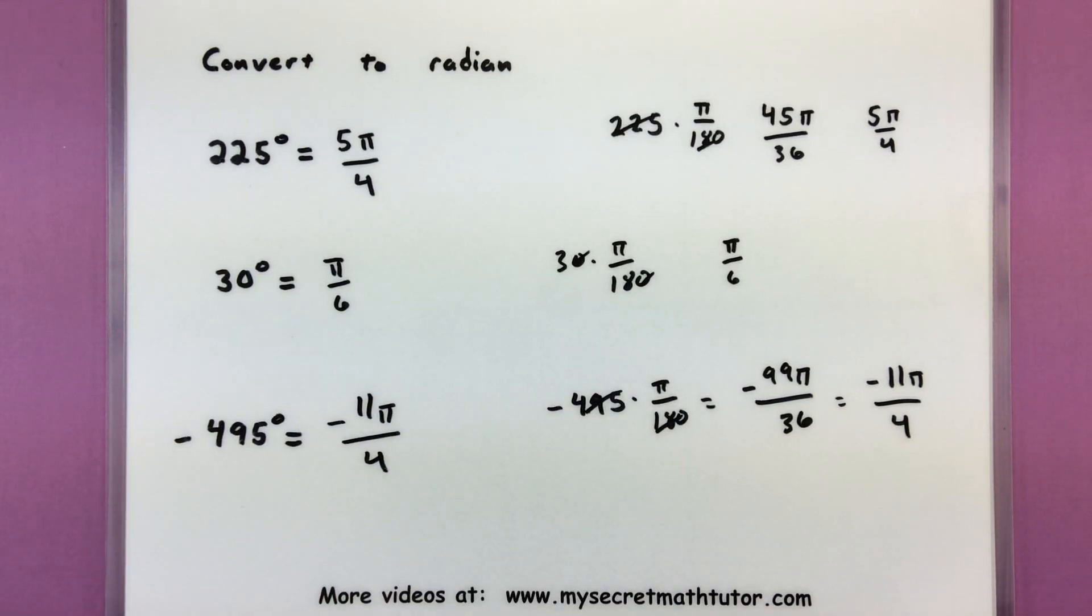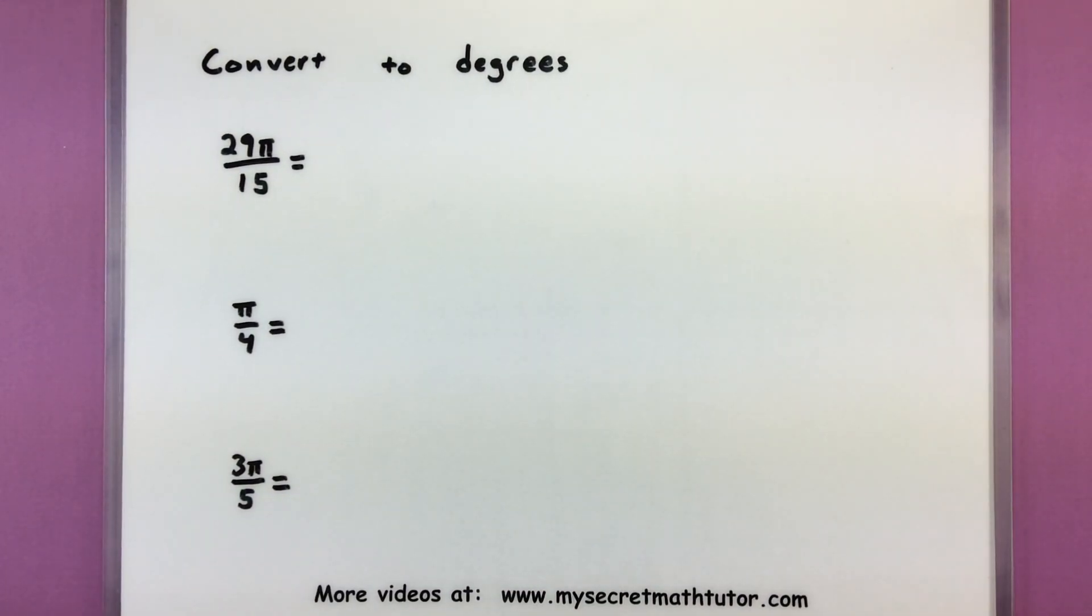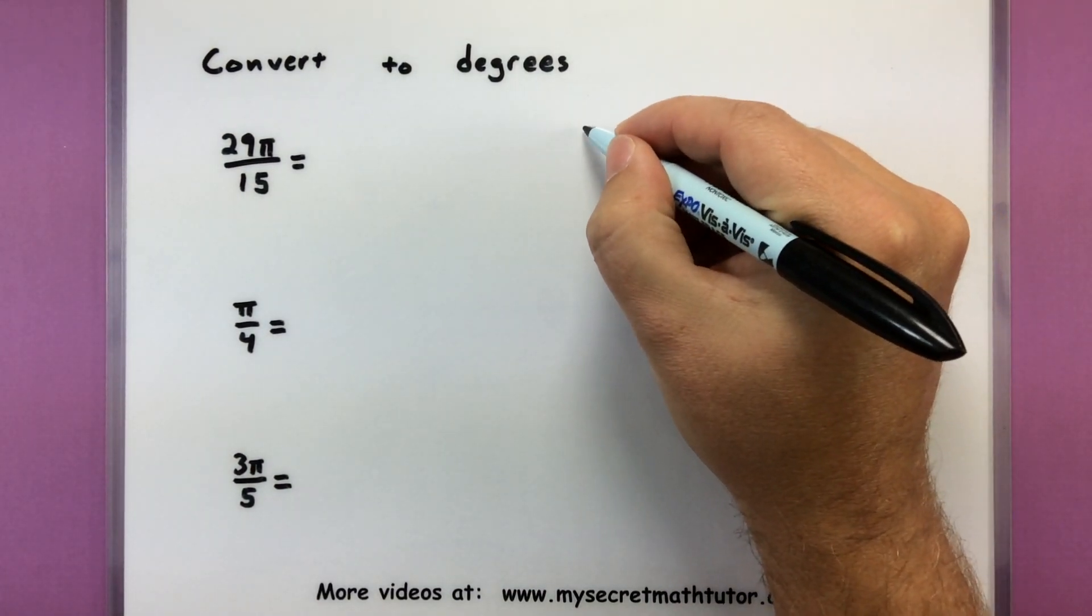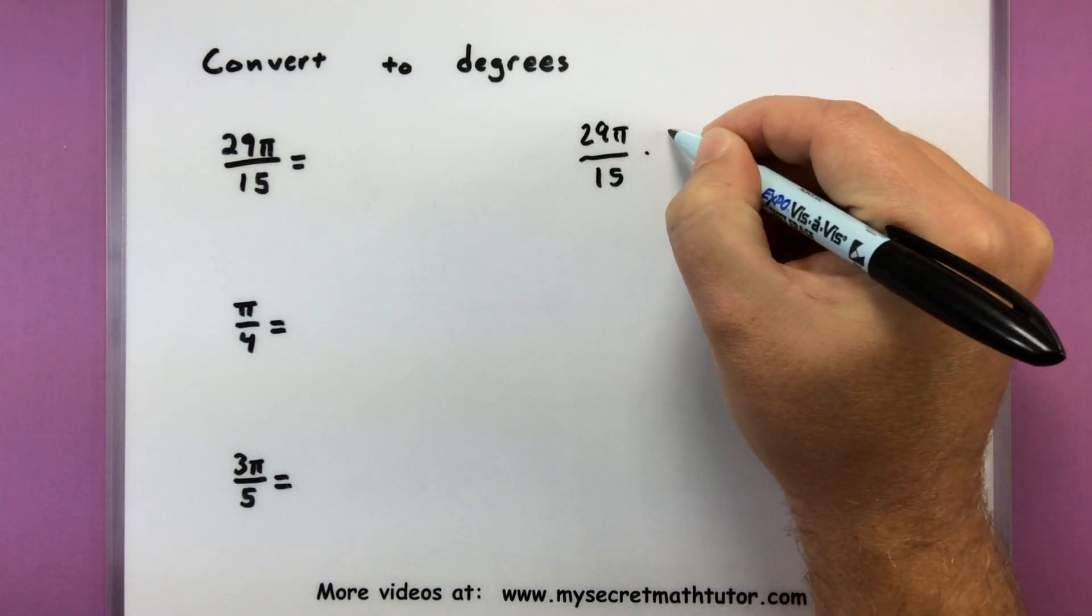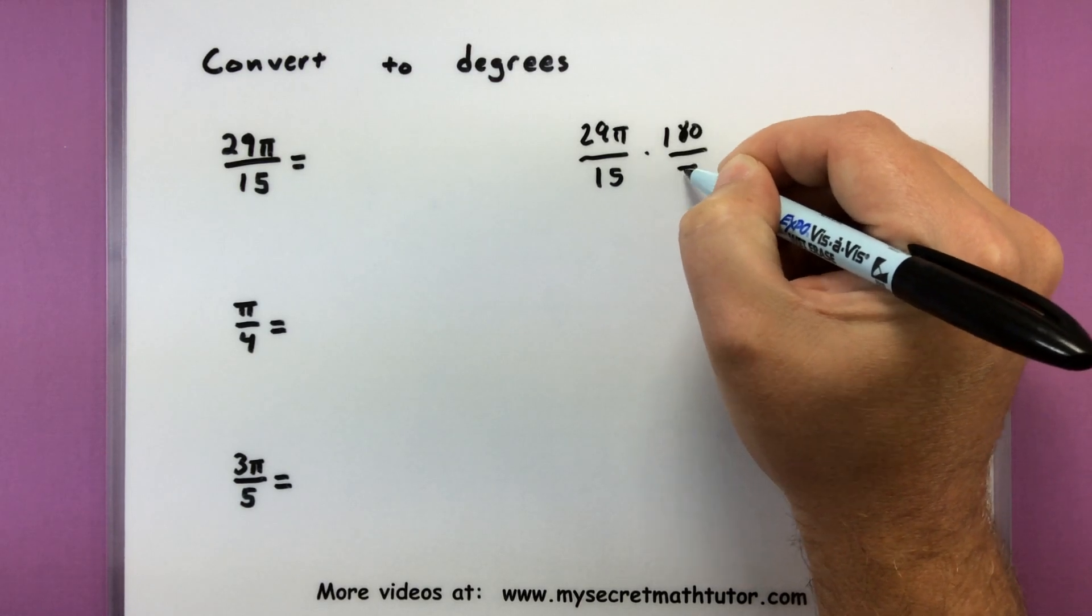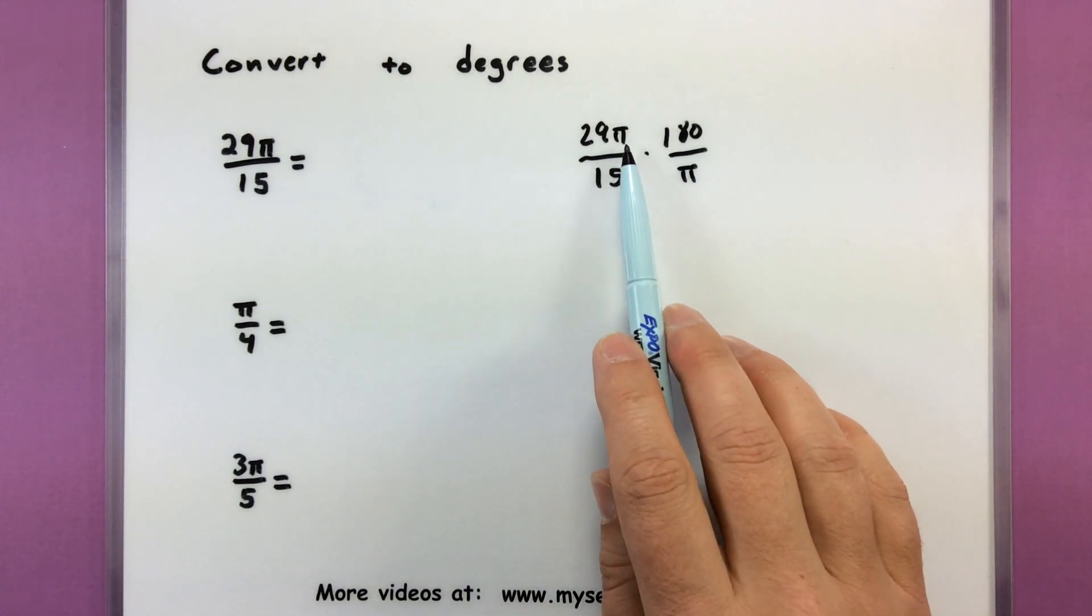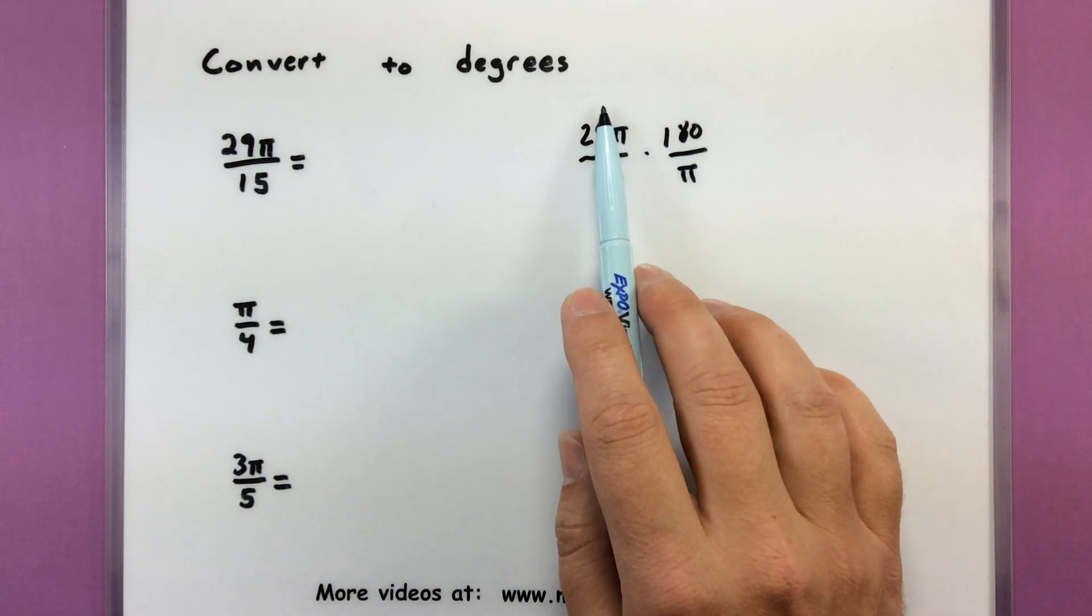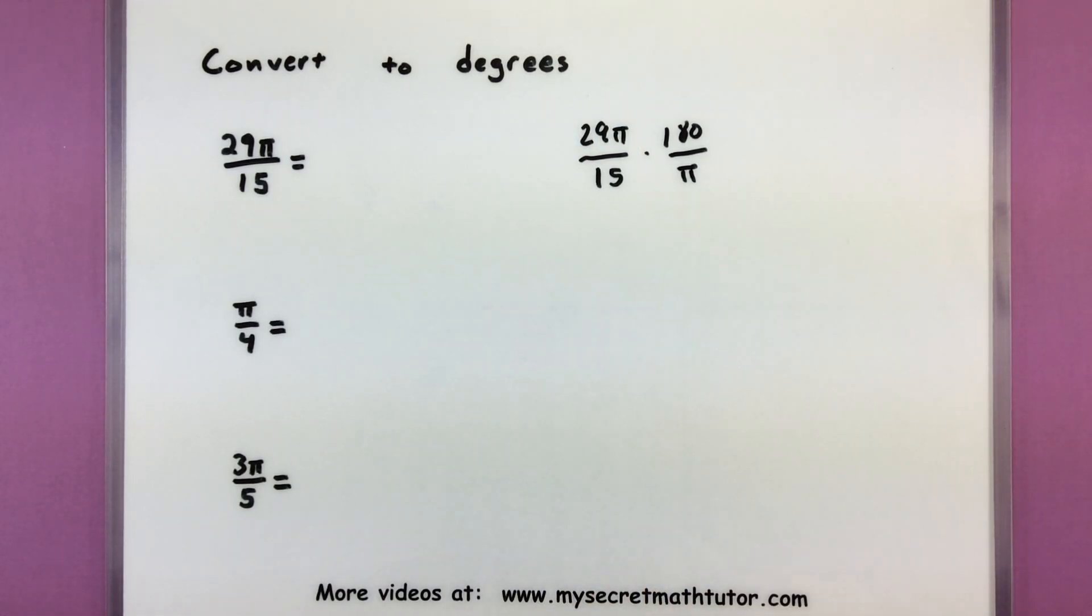Alright, so we've done this direction, let's do the other direction. And the only big change is I'm going to flip that fraction over. So let's take 29 pi over 15, and we'll multiply by 180 over pi. Now, one way that I really keep these fractions straight, like, should I be multiplying by 180 over pi, or pi over 180, is I kind of think of what I want to get rid of. If it's already in radians, chances are it has a pi, and I want to get rid of that pi, so the pi is going to be on the bottom.